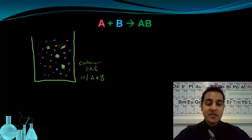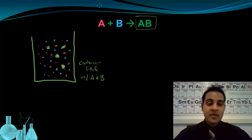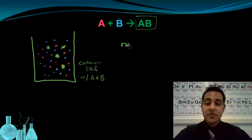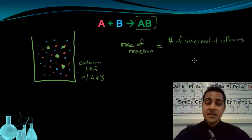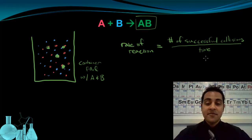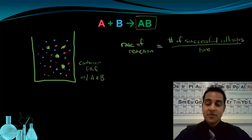All of a sudden I have a product being formed in this container. If I'm going to describe the speed at which AB is being formed, that depends on how many collisions there are in general and the fraction of those collisions that are successful. The rate of reaction is equal to the number of successful collisions that occurs in a certain amount of time — successful collisions divided by the total amount of time. There's a slight problem with this definition: while it's technically true, it's very difficult to count the number of successful collisions because there are so many particles in any given sample. It's just not realistic to count atoms that are colliding.